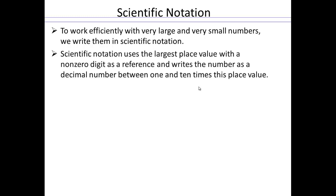In order to write scientific notation, we use the largest place value with a non-zero digit as a reference, and then write the number as a decimal number between 1 and 10, times 10 to the power that the place value is.